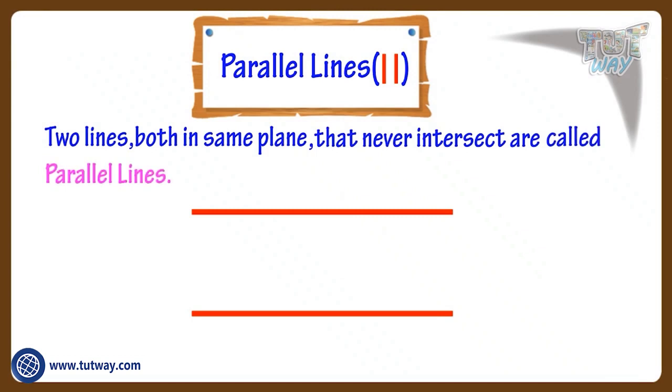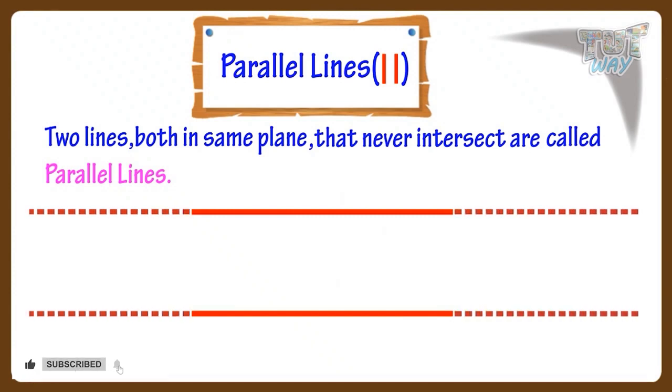Two lines, both in same plane, that never intersect are called parallel lines. Parallel lines remain the same distance apart at all times. These are two parallel lines. They can never meet each other, no matter how far you extend them. The distance between them always remains the same.